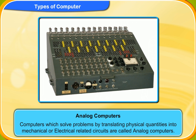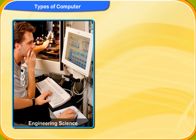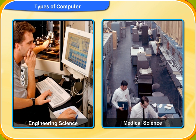Let us now learn what an analog computer is. Computers which solve problems by translating physical quantities into mechanical or electrical related circuits are called analog computers. Analog computers are used to process continuous data and are used in the field of engineering and medical science, as they are speedy and produce fast results.